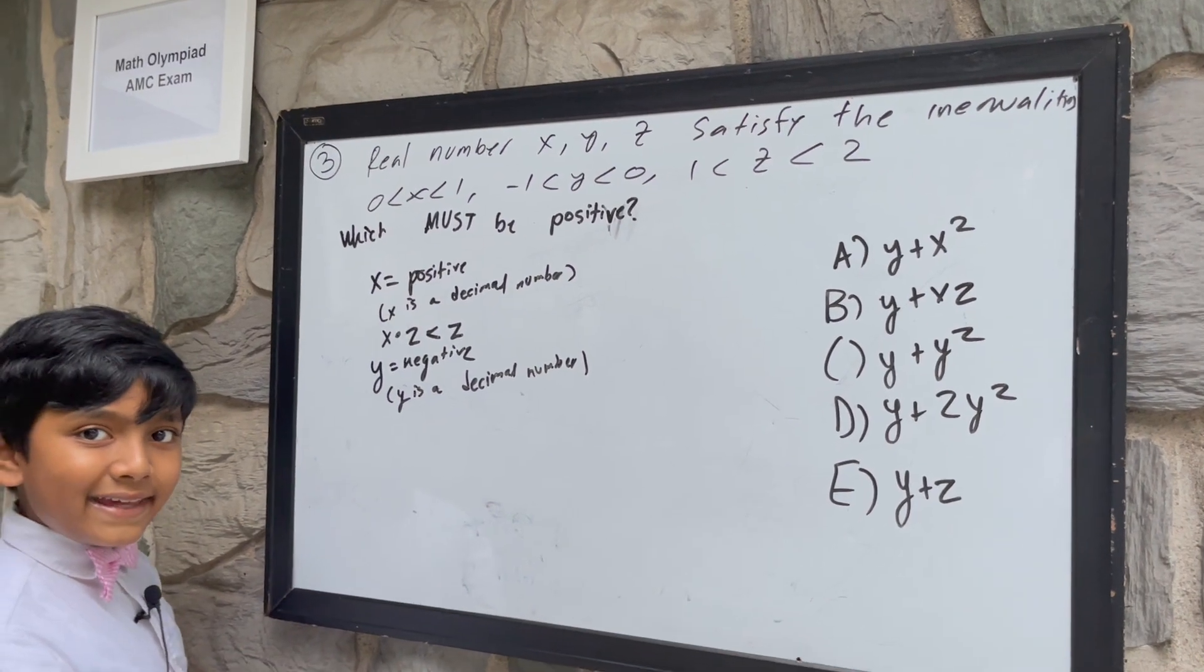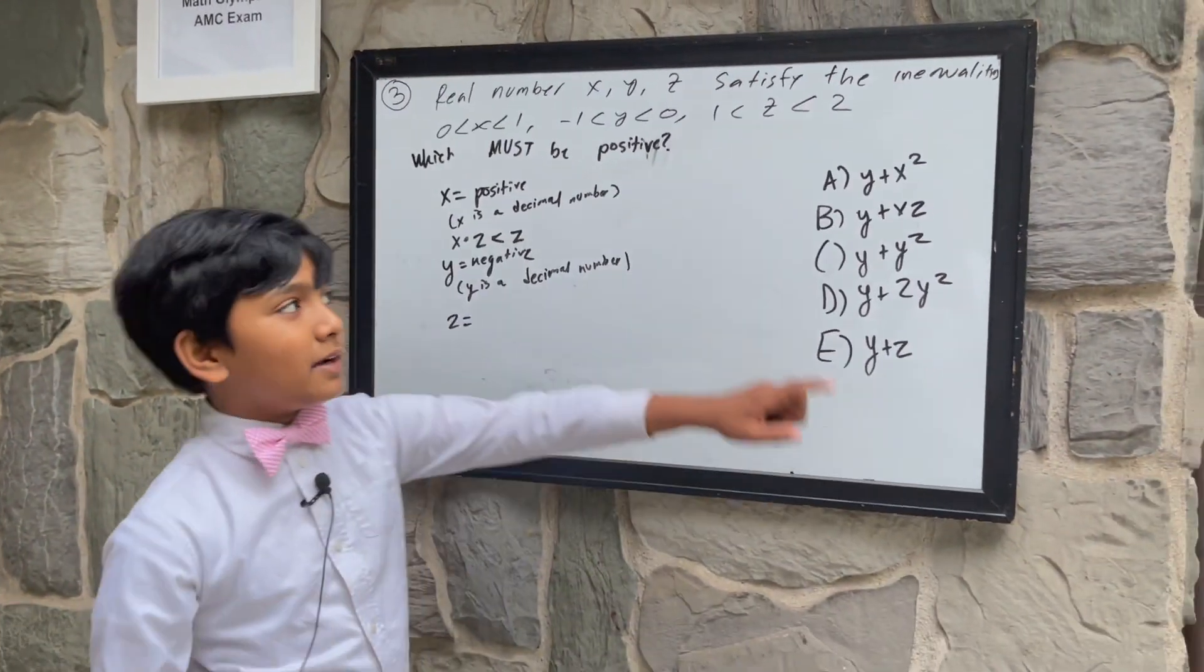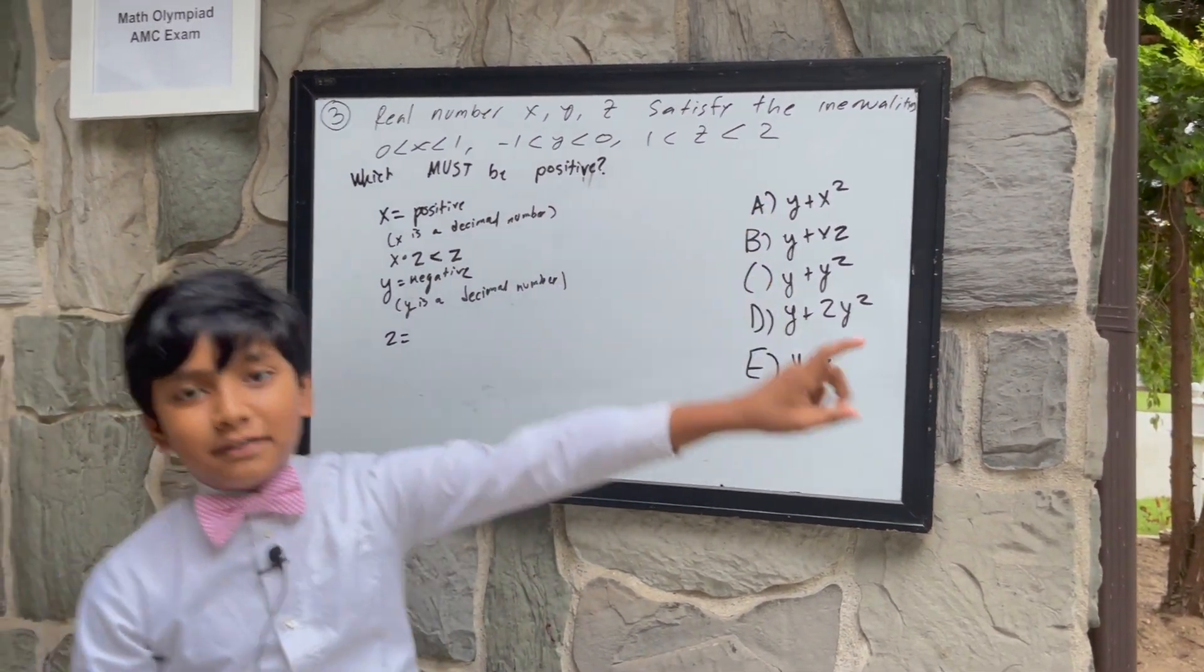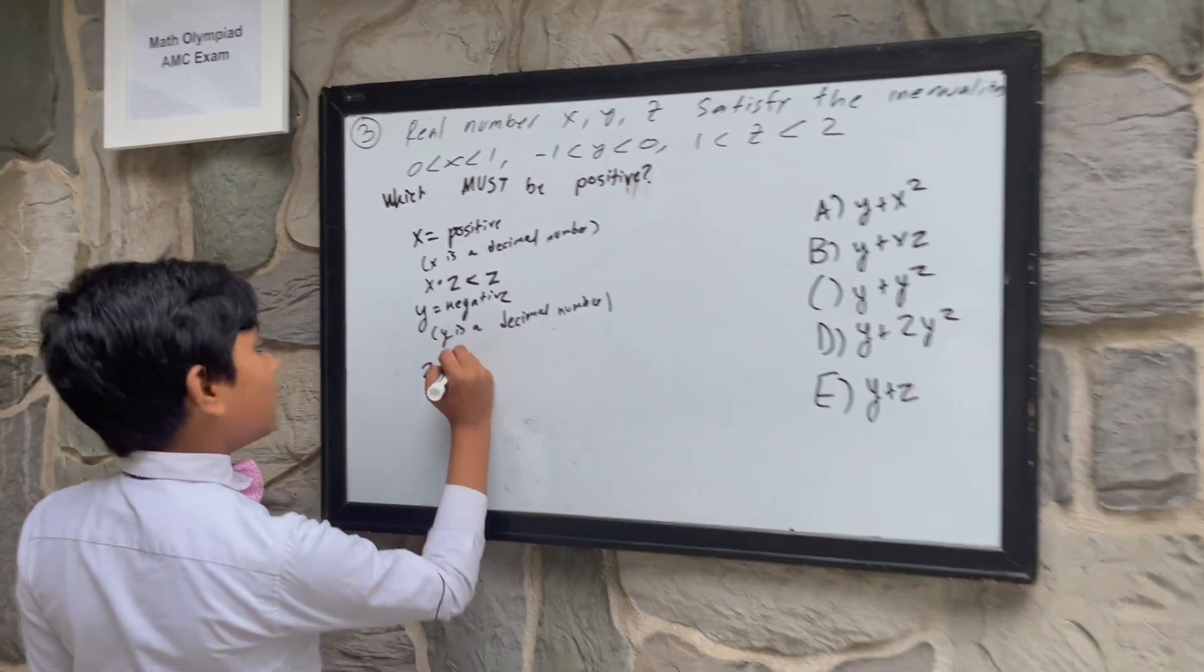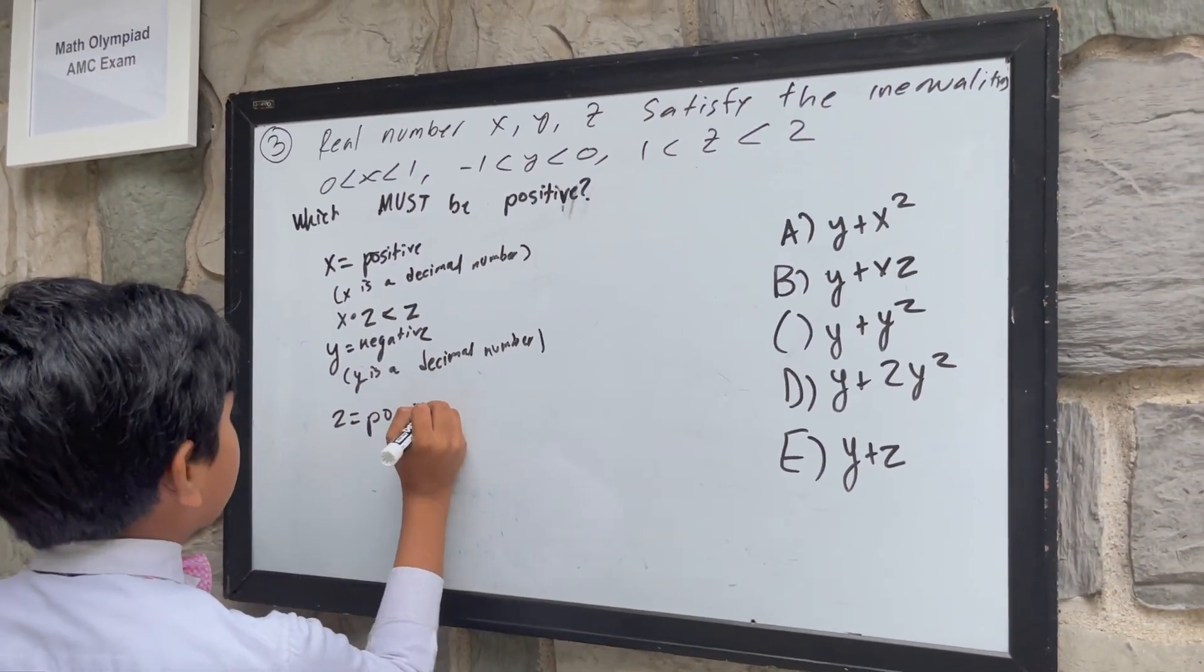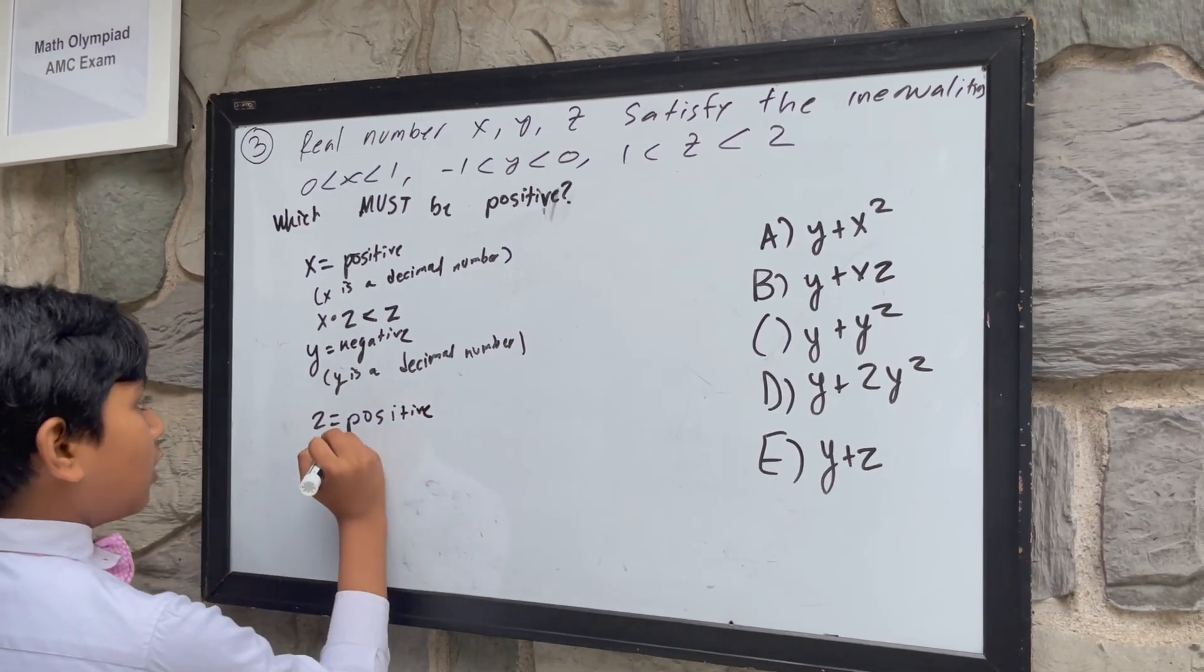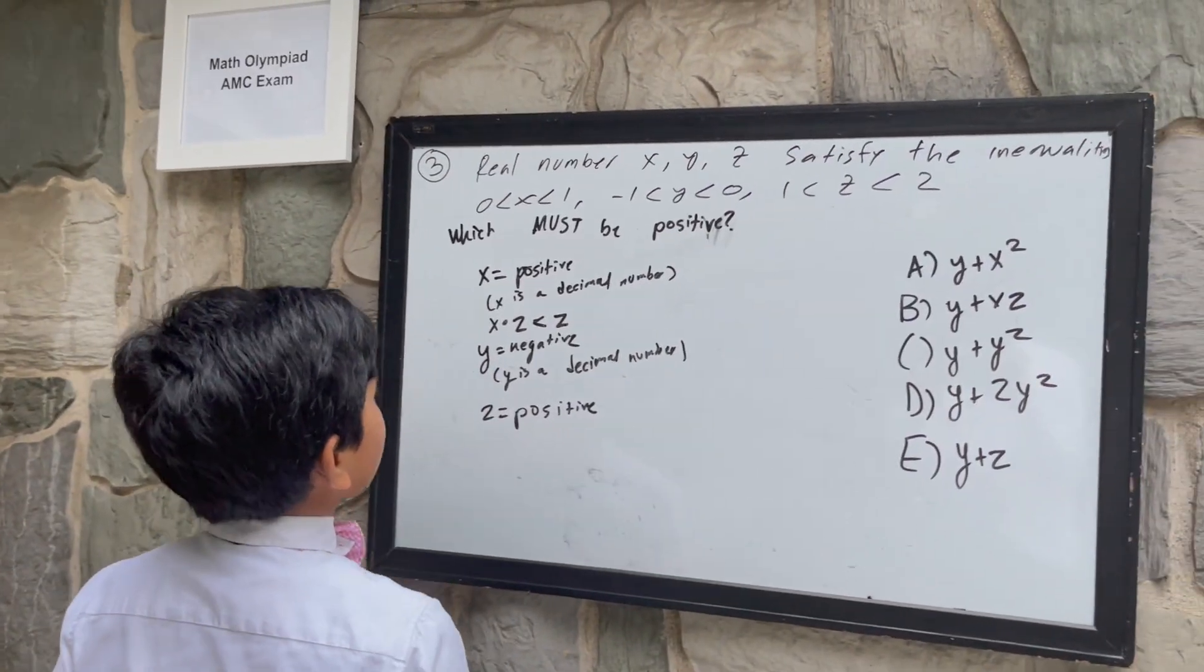And finally, can you predict what z is? Because it's between the positive numbers 1 and 2, is it positive or negative? Well, it has to be positive, since it's between 1 and 2, which are also positive numbers. It's not a decimal number. So, let's get into it.